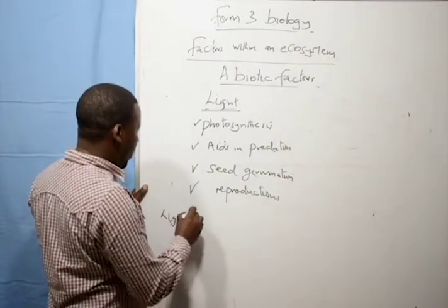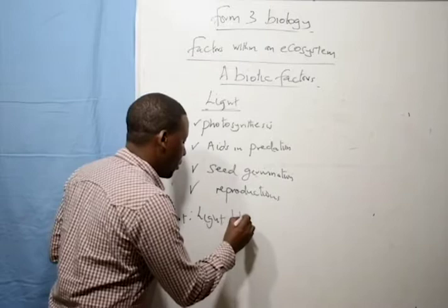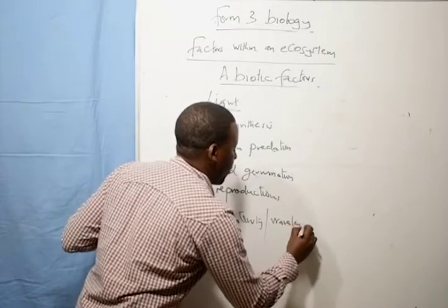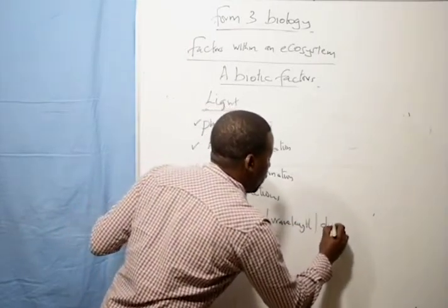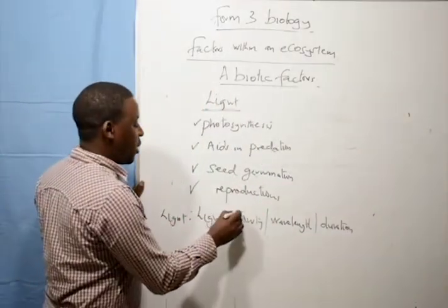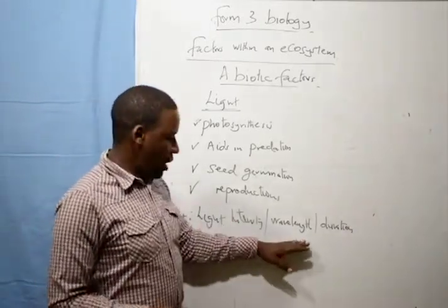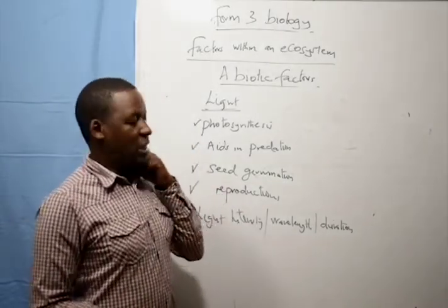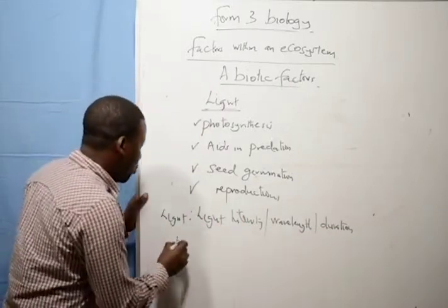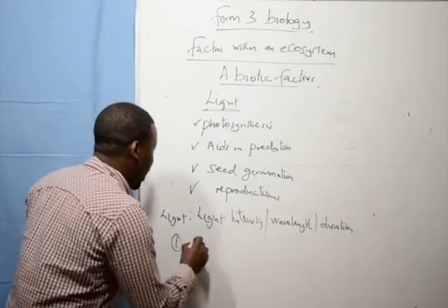Now light within an ecosystem is measured in terms of light intensity, light wavelength, and light duration. These are the three aspects of light that are important in an ecosystem: the intensity of light, the type of light wavelength, and the duration of light. How many hours in a day do you have light present?